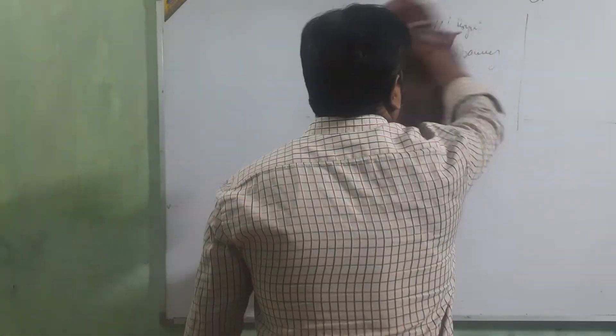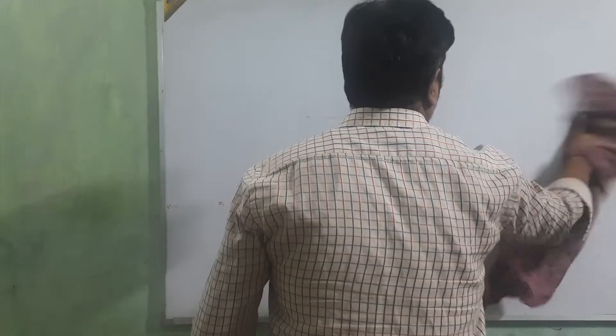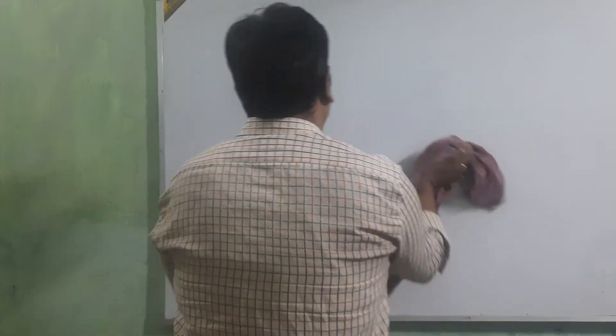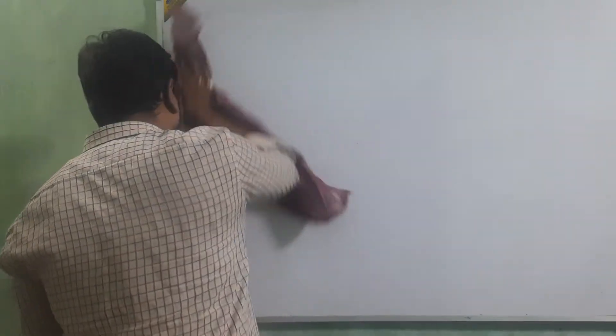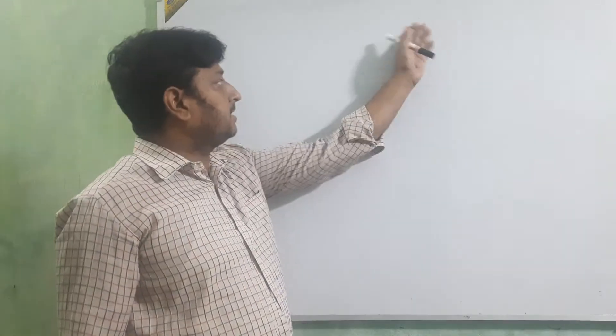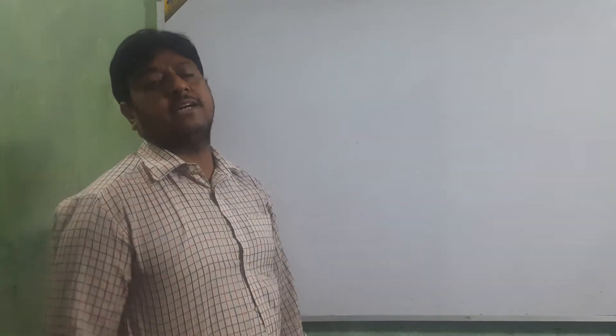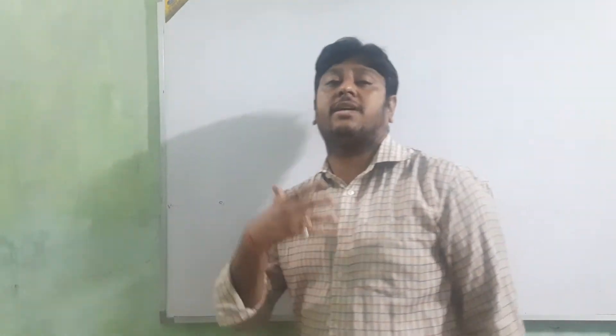Today I am going to start the next topic: the capital account. There are two types of capital. One is fixed and the second is fluctuating. In your book both are given — fixed and fluctuating. If fluctuating capital is there, then we are going to make only one capital account. If fixed capital is there, then we are going to make two accounts: one is the capital account and the second is the current account.